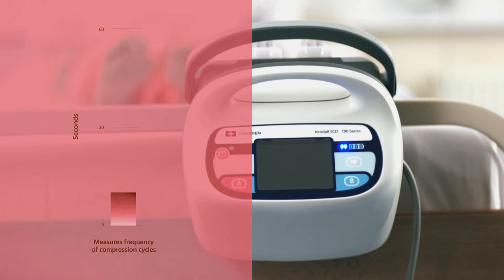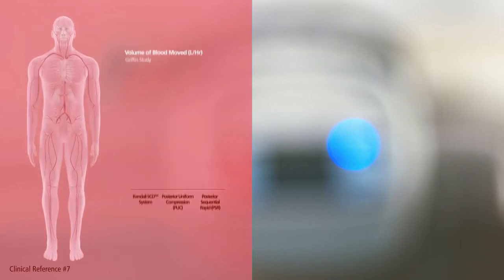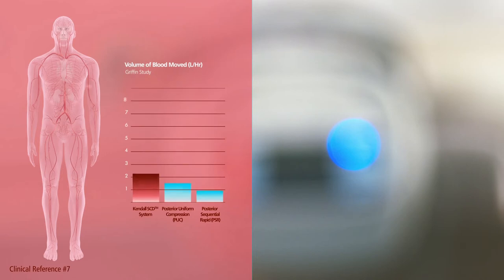VRD works by measuring the time it takes for a patient's veins to refill with blood after being compressed, and then setting the frequency of compression cycles based on the patient's particular venous refill time, anywhere between 20 and 60 seconds. This number is automatically recalculated every 30 minutes.